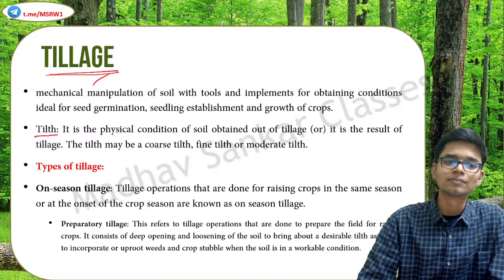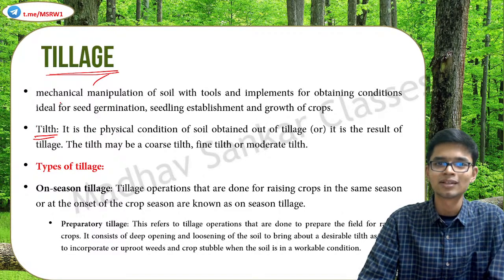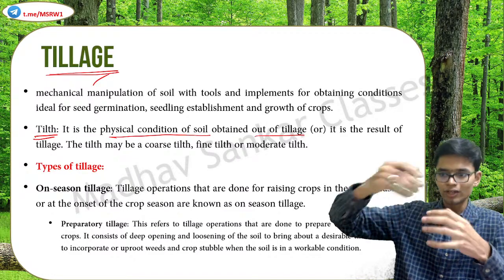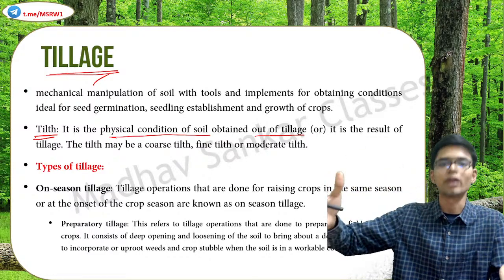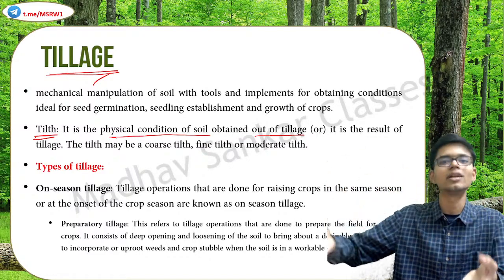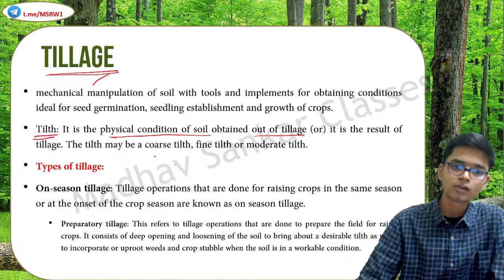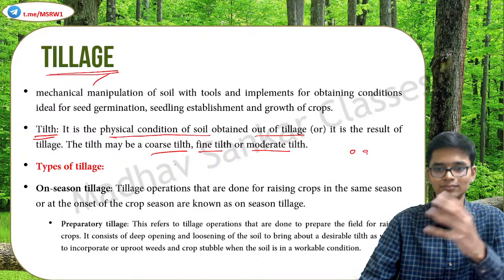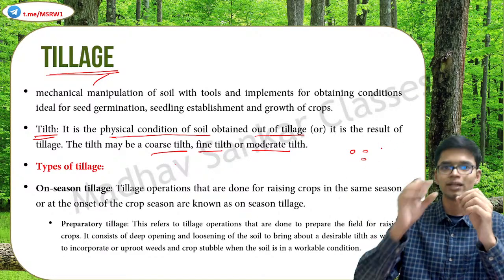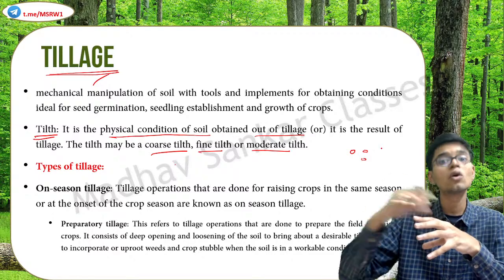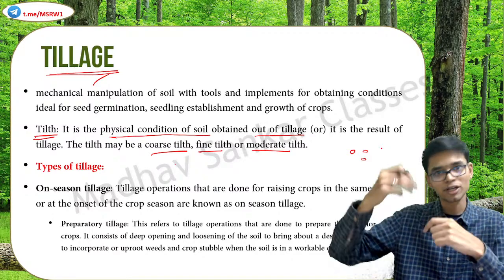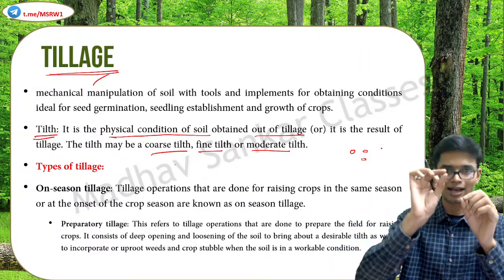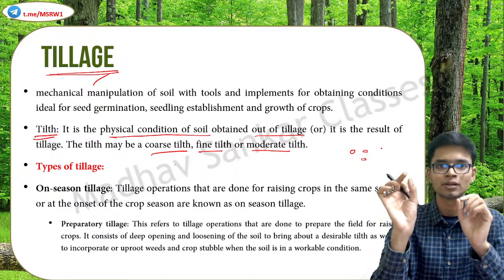Tilt is a term associated with tillage — it is the physical condition of the soil obtained as a result of tillage. When you plow the soil, whatever the condition of the soil at the end of tillage is known as tilt. It can be coarse tilt, fine tilt, or moderate tilt. In coarse tilt, the soil particles are more of a conglomerate. In fine tilt, the tillage is much more thorough, rendering soil particles as fine as possible. Moderate tilt is somewhere in between.